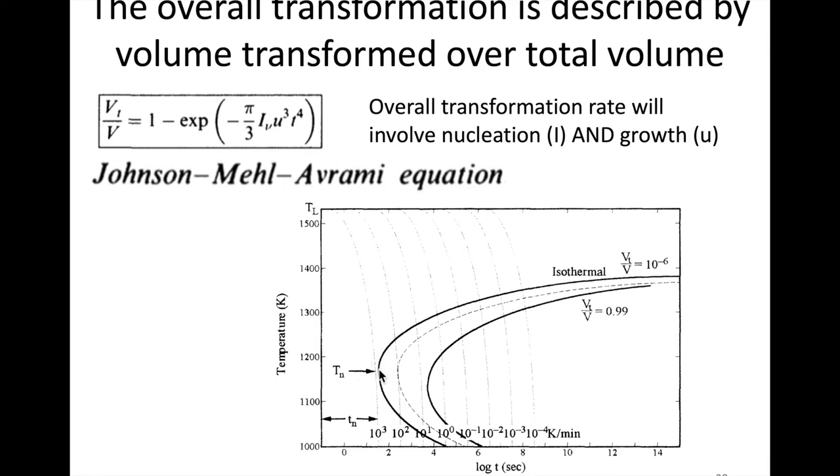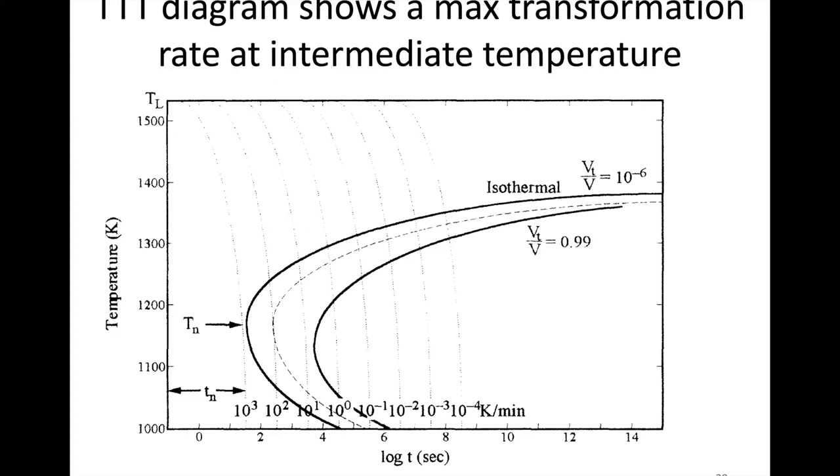The maximum, the fastest it occurs is in the intermediate temperature which is right here - this is what we term the nose. This is at an intermediate temperature about 1175 or close to 1200, and we see that that's the fastest that this transformation starts and finishes. We want to try to avoid the transformation of this material that starts out as a liquid and forms a crystalline solid. These transformation diagrams, which we sometimes call TTT for time-temperature-transformation diagrams, have a maximum rate at the intermediate temperature.